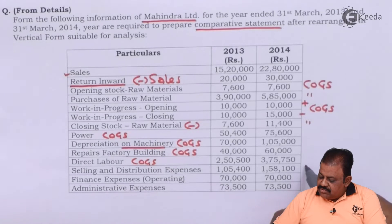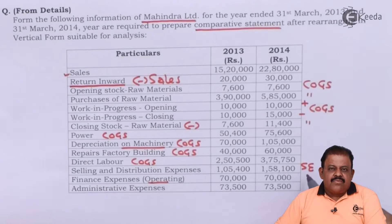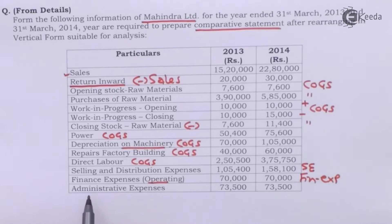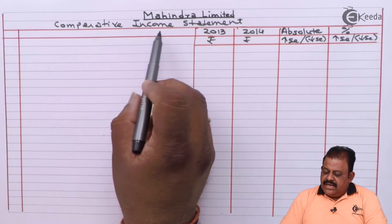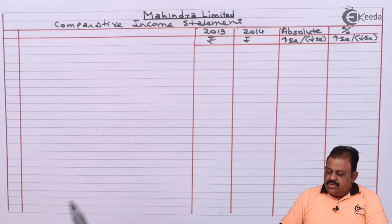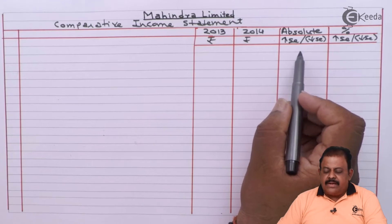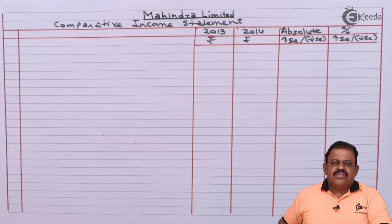Selling and distribution expenses will be part of operating expenses. Finance expenses of operating nature — they have clearly stated these are of operating nature, so we are required to include them in operating expenses. Administrative expenses will also be part of operating expenses. We have to first start with sales in the comparative income statement.